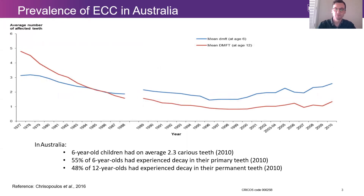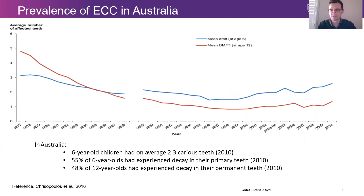This graph here shows the prevalence of early childhood caries in Australia. The mean DMFT for children aged six is indicated in blue and the red line indicates the mean DMFT for children aged 12. The key takeaway point is that beginning in the early 2000s, we can see a steady increase in the rate or prevalence of early childhood caries in Australia, so this continues to be a problem for us today.